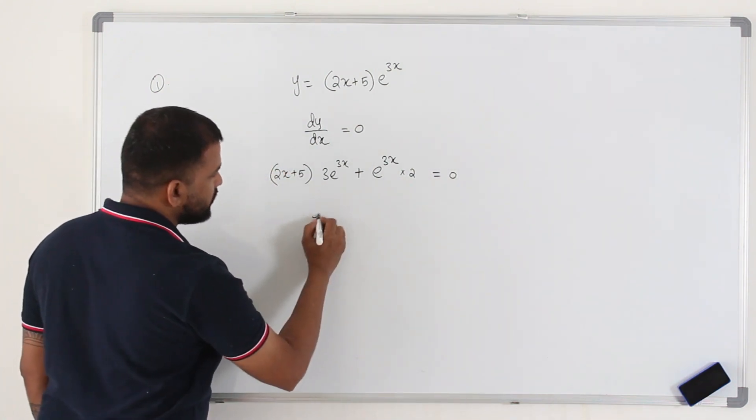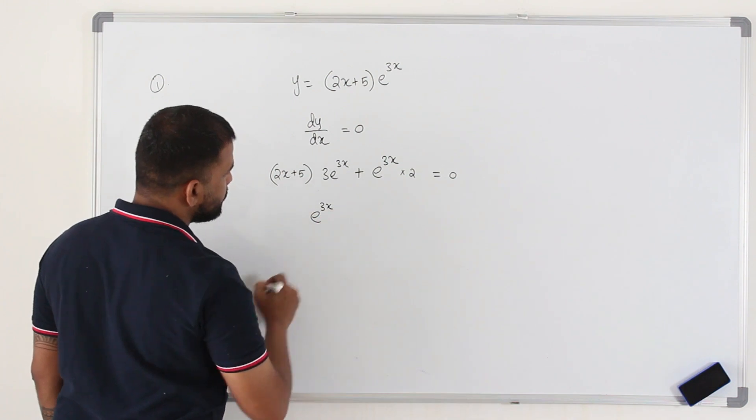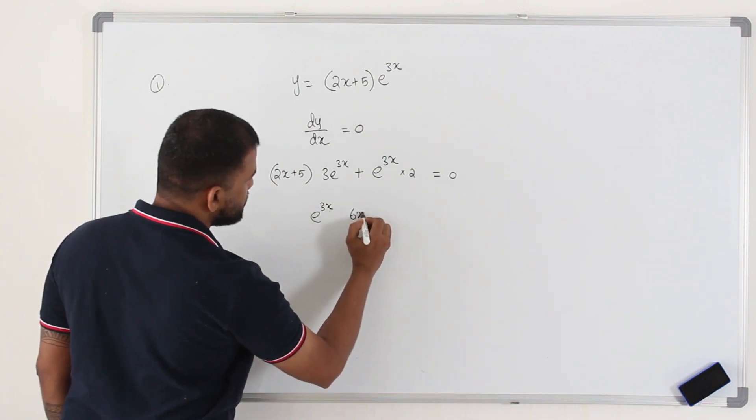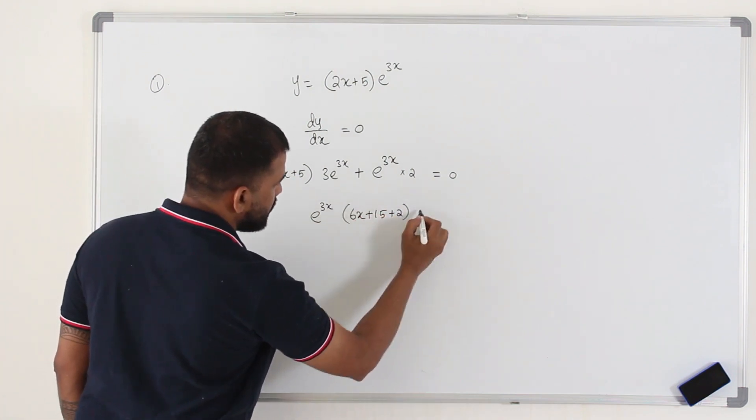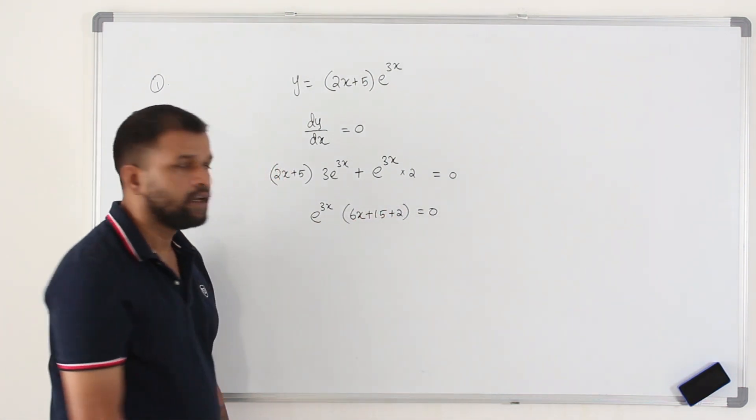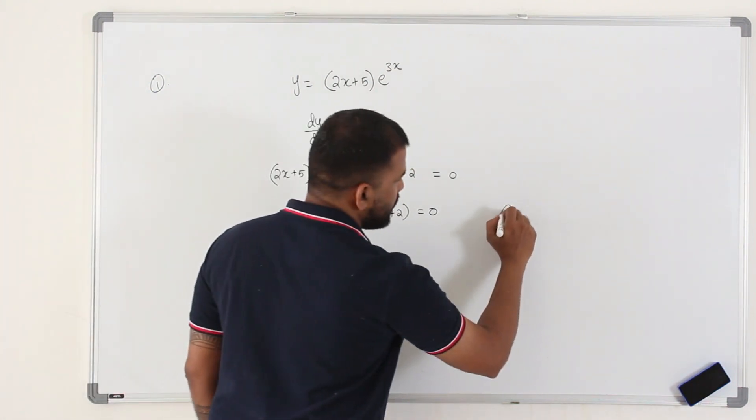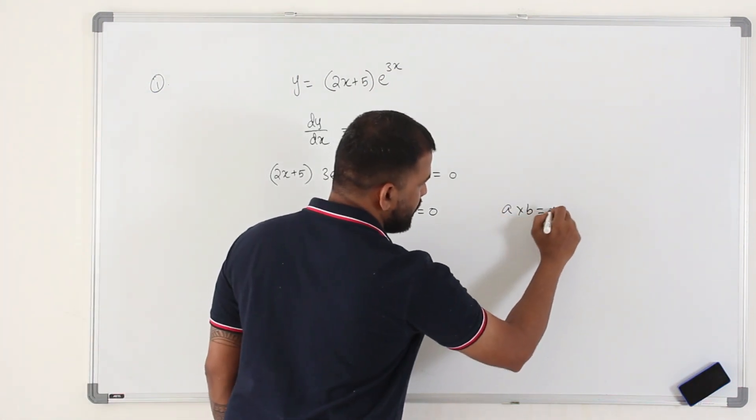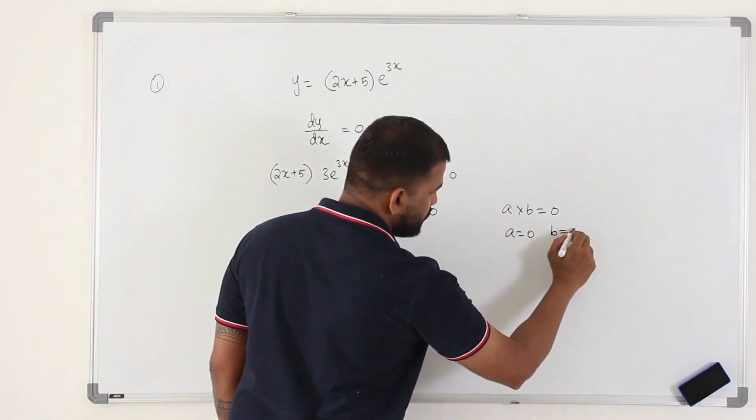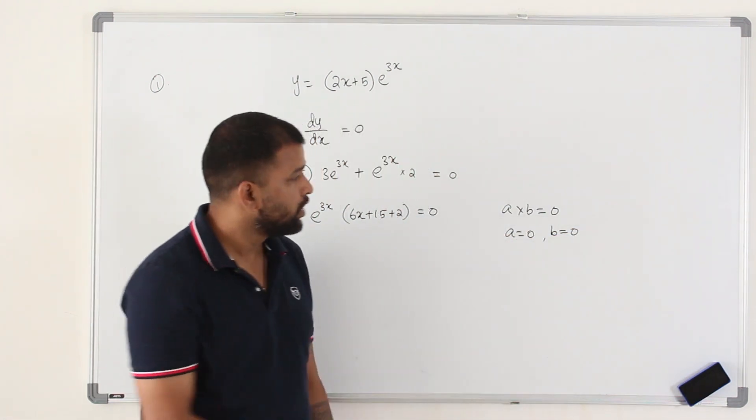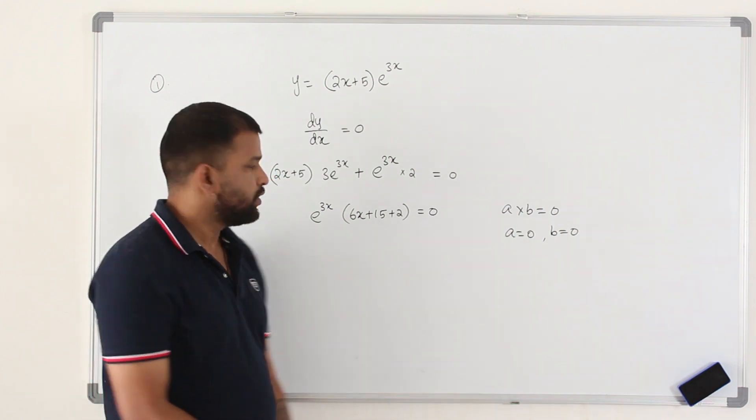You can take e^(3x) as a common factor out. So you get 6x + 15 plus 2 equals 0. So whenever you have an equation like this, a times b equals 0, either a should be 0 or b should be 0. You need to equate them separately to 0.